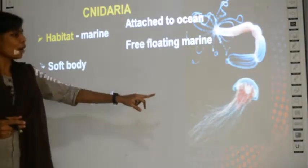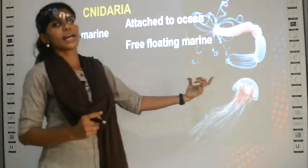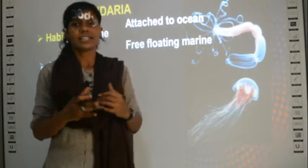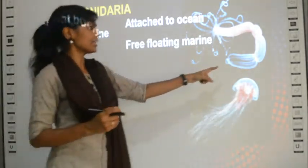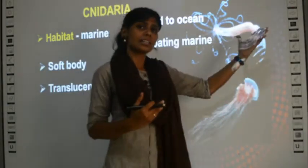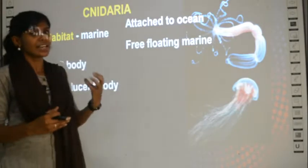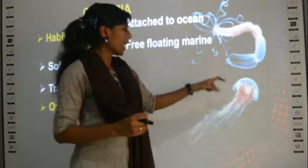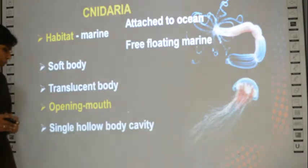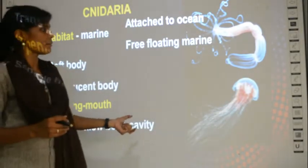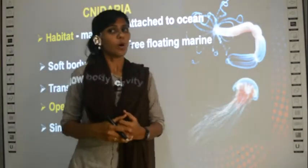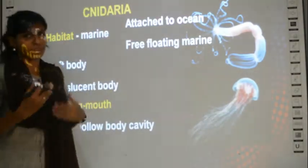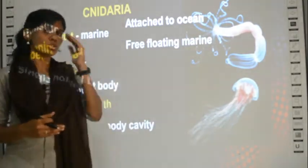Cnidaria have a soft and translucent body. Translucent means semi-transparent - partially see-through. They have an opening called a mouth and a single hollow body cavity. For every group you should know the properties, because if asked to list out the characteristics of Cnidaria, you should be able to explain all these points.